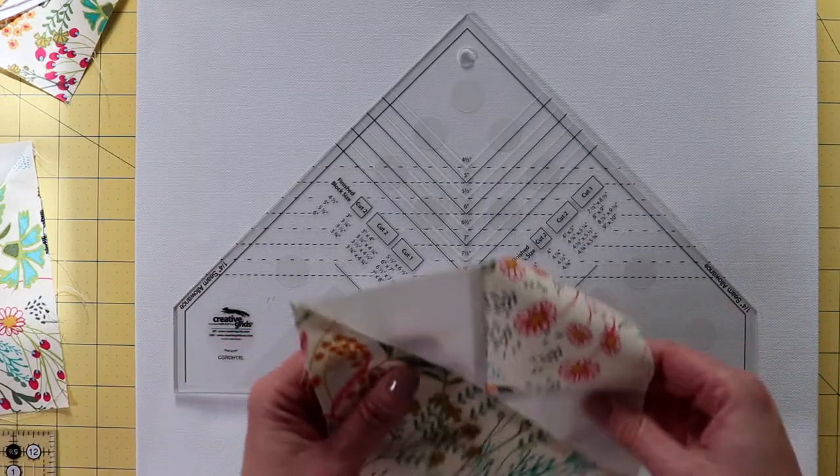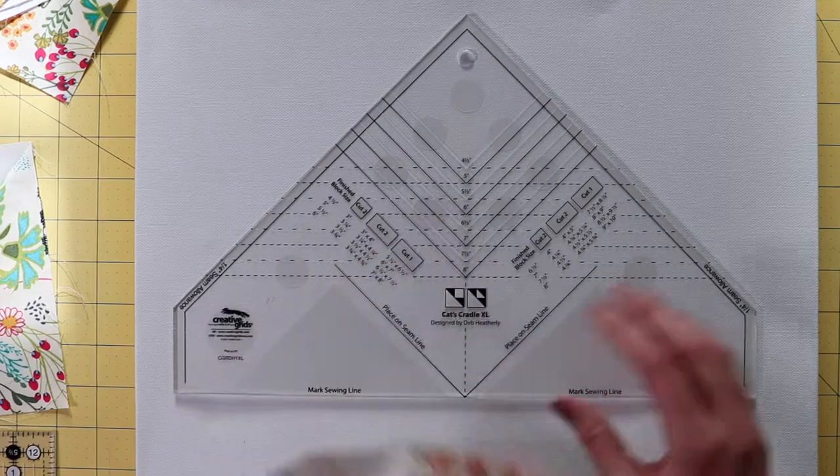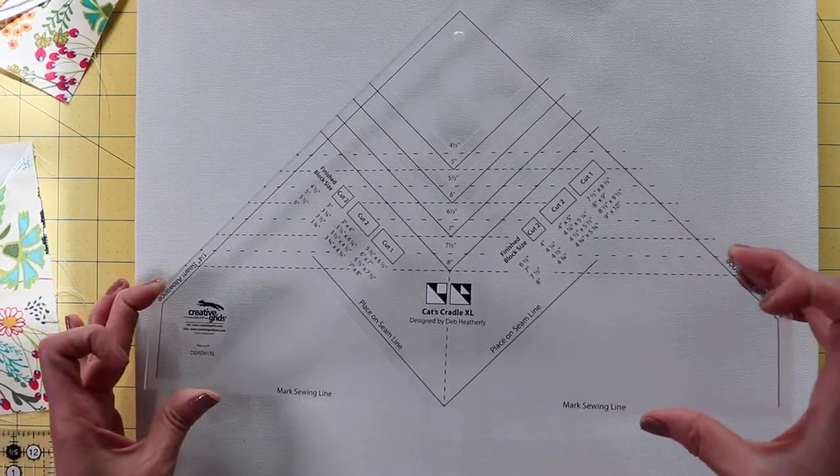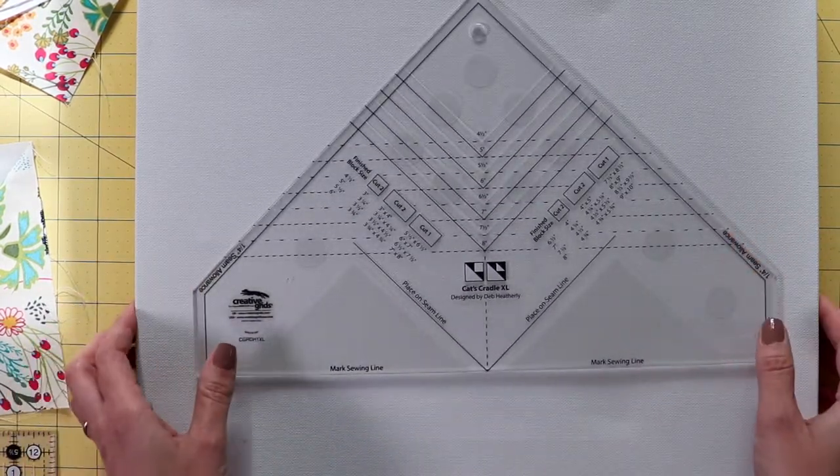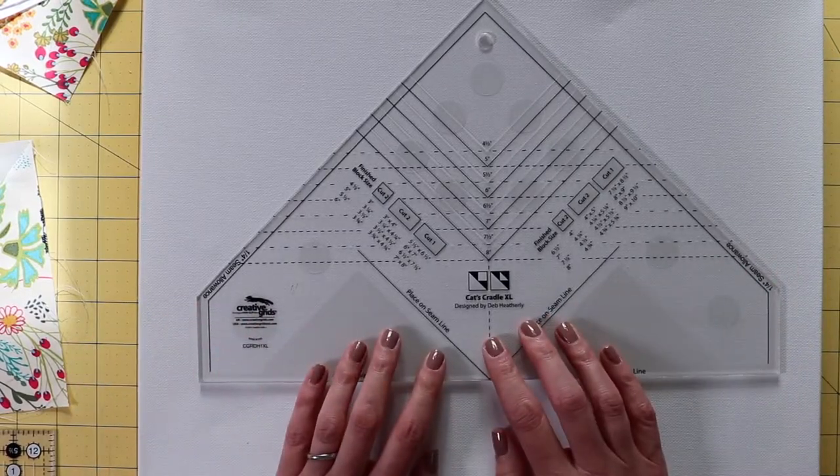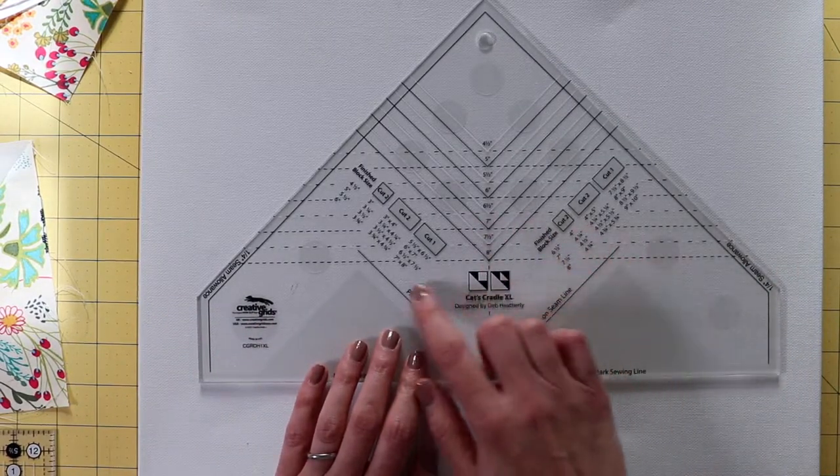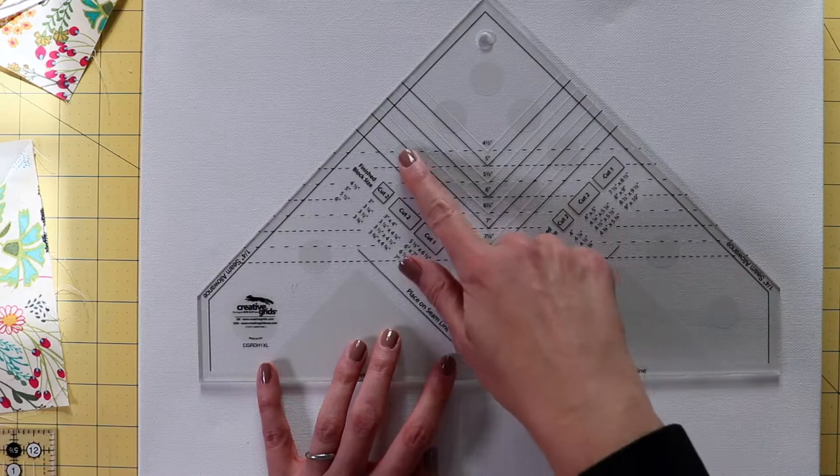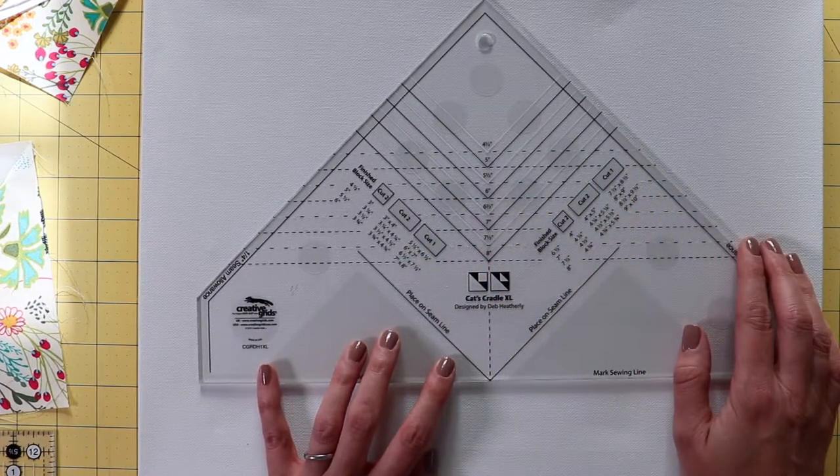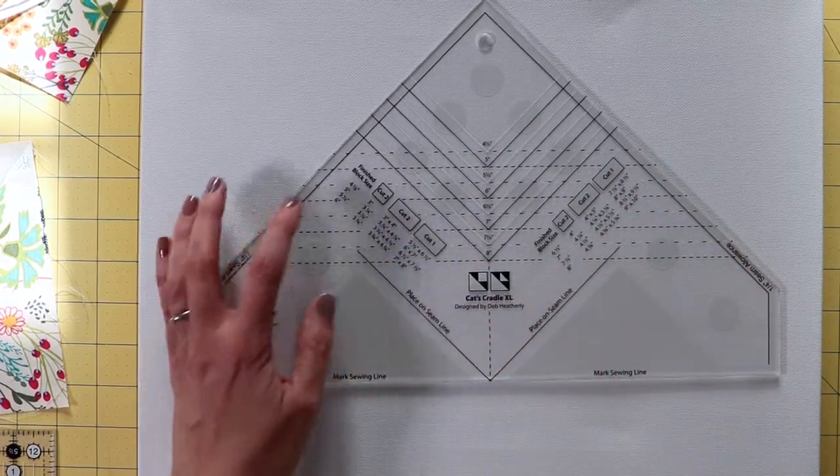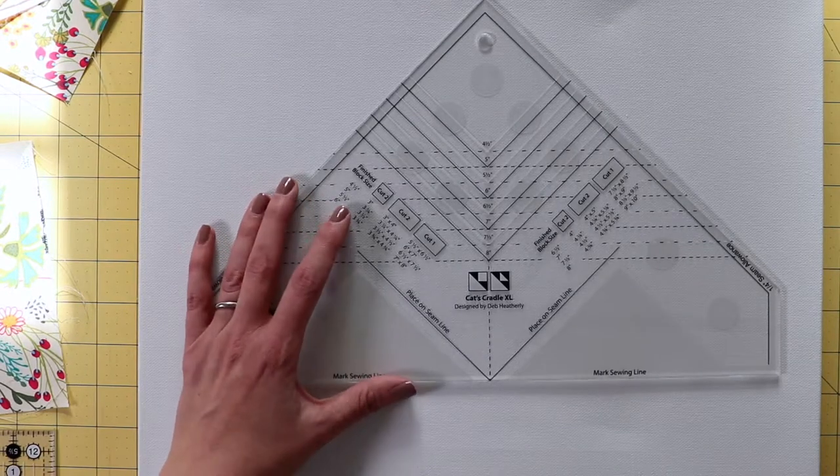Today we're going to show you how to make a Cat's Cradle Square using the Cradle Grids Cat's Cradle Extra Large ruler. This is actually a really cool ruler because it shows you basically what you need to cut. It gives you all the lines for the measurements. You can make a variety of squares from 4½ inch square up to 8 inch square.